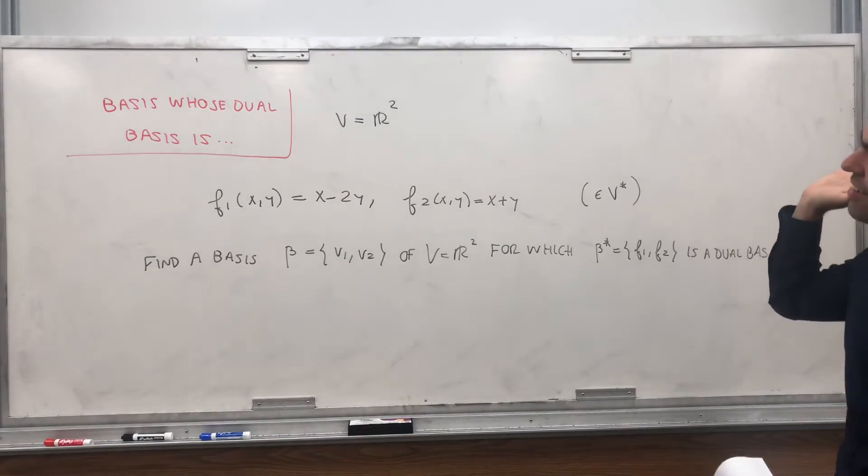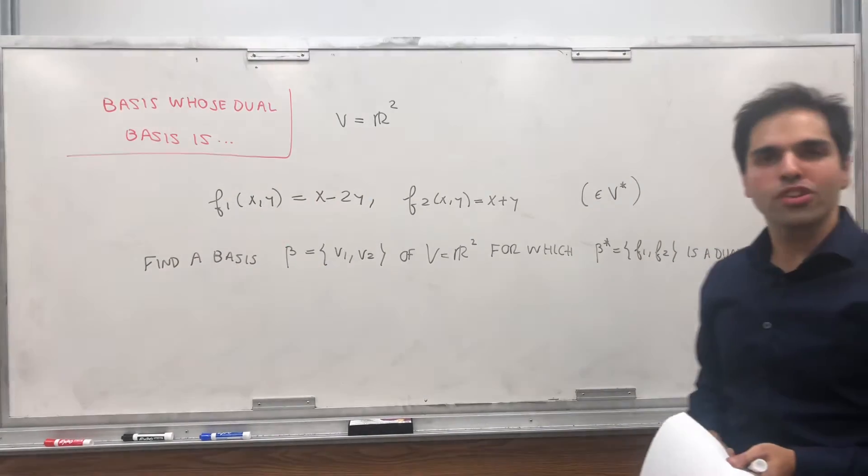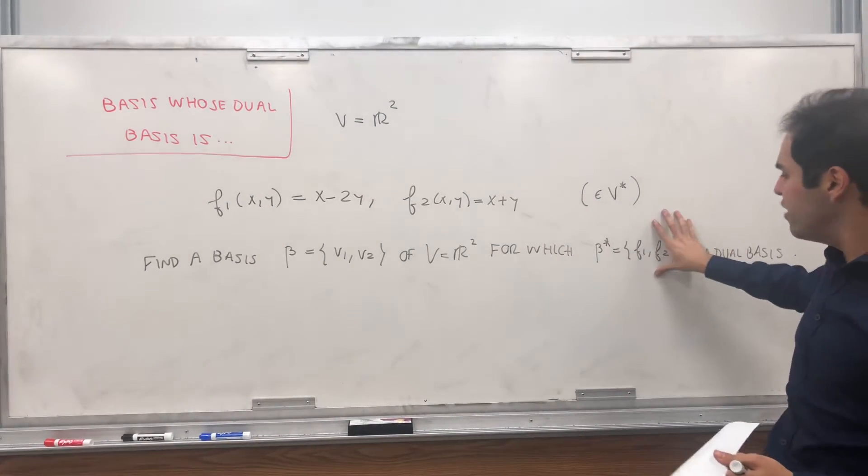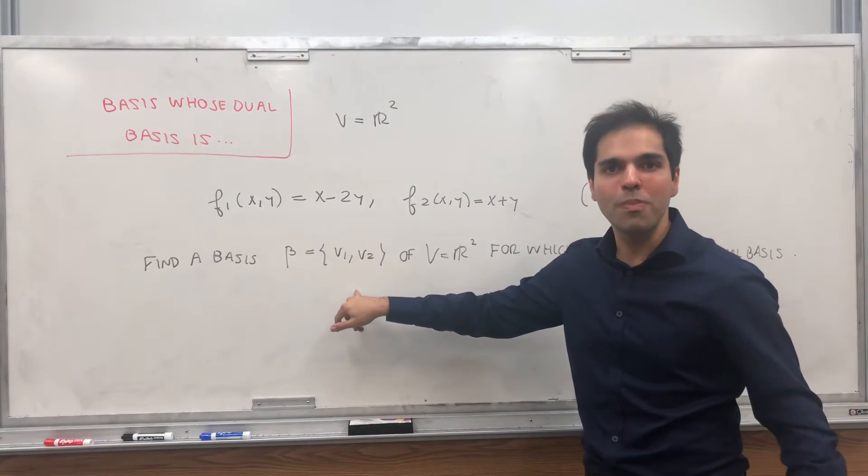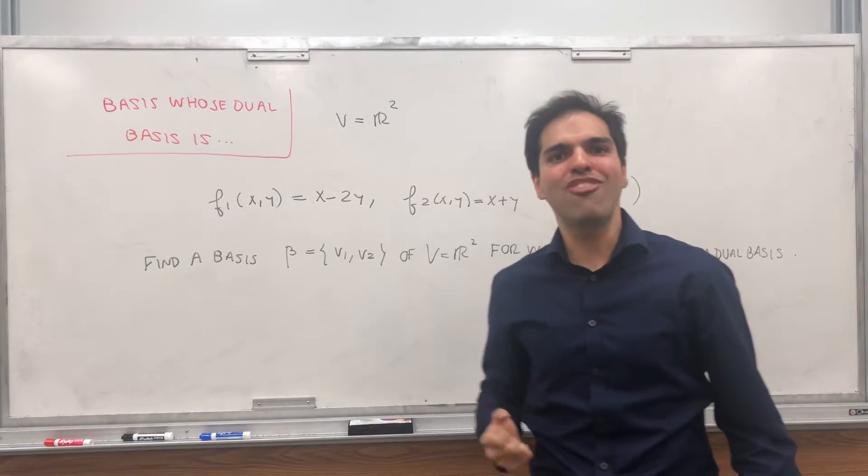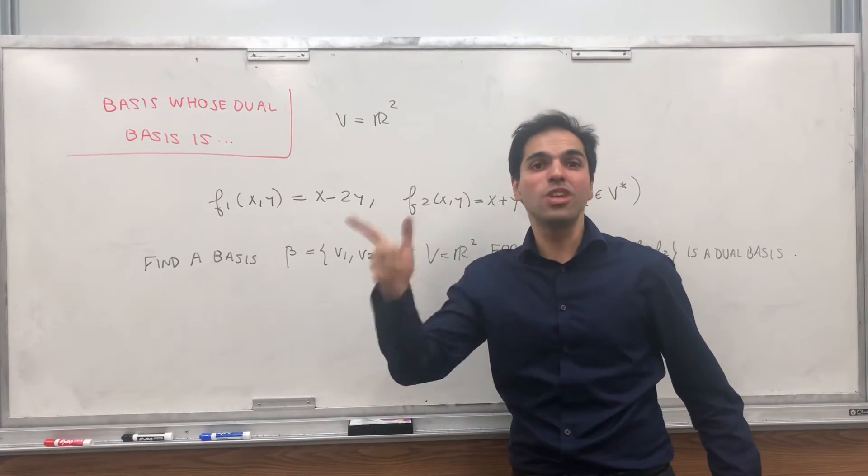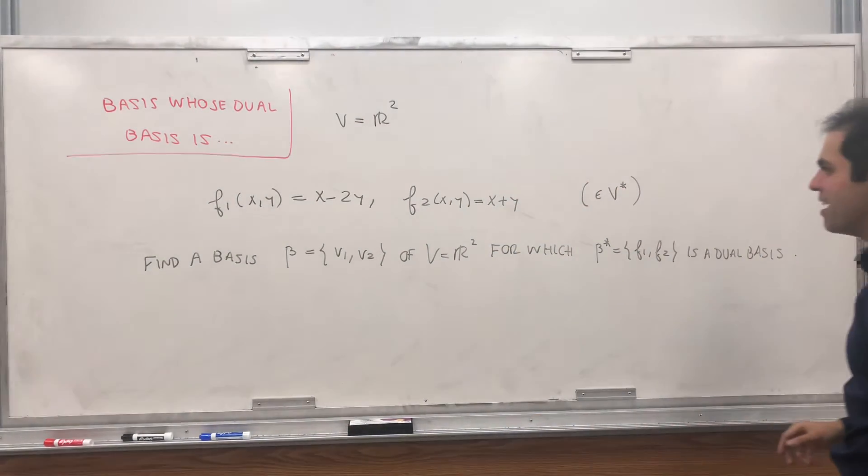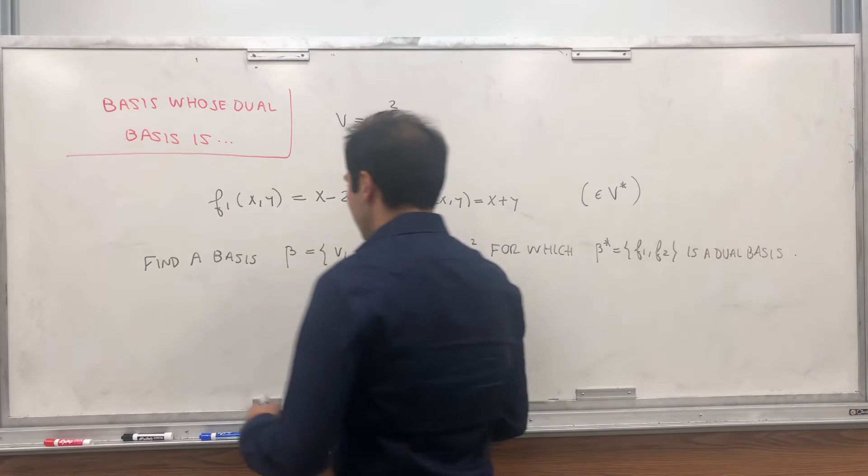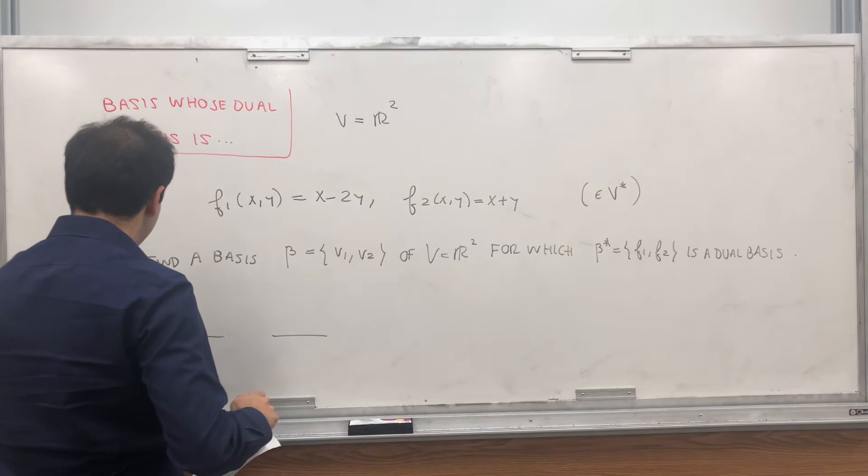And again, given a basis, it's very easy to construct a dual basis, and I've shown this in a previous video. What we're doing here is now given a dual basis, find the original basis. And by the way, this is always possible to do in the finite dimensional case, and I've done a video on that. It's really cool. It explores the double duality principle, if you'd like. Now, what is a dual basis? It just means f1 is 1 on V1 and 0 on V2, and f2 is the opposite.